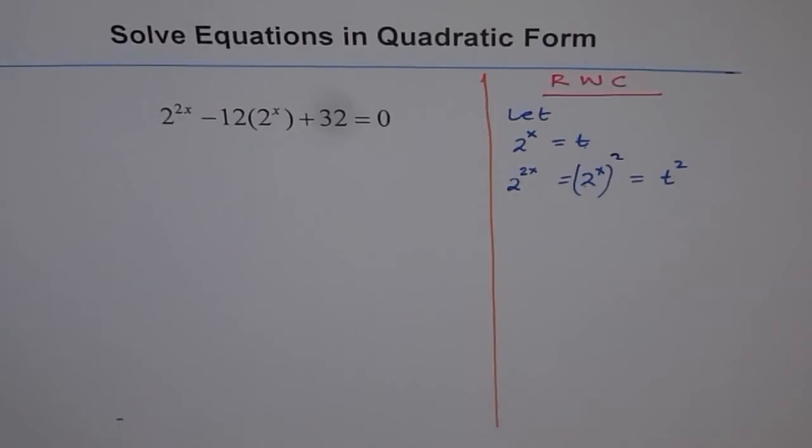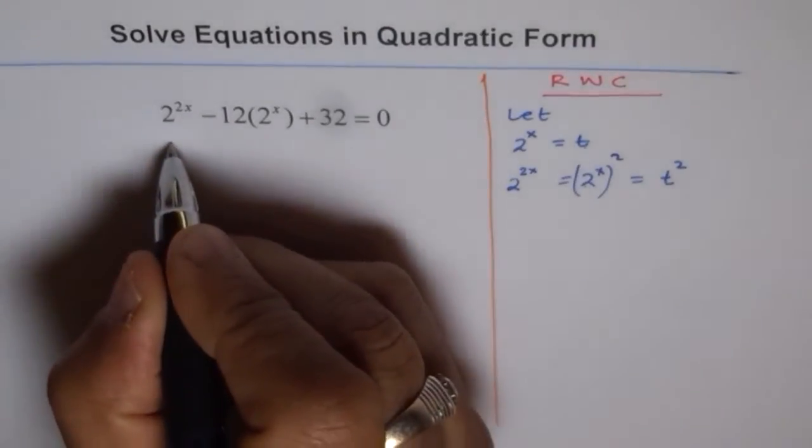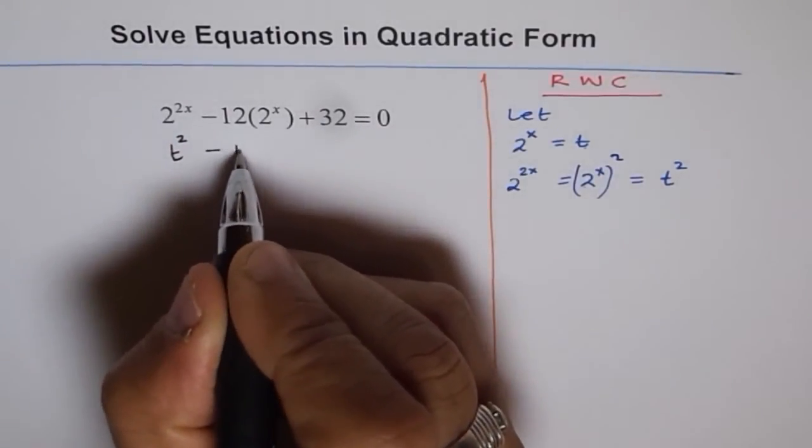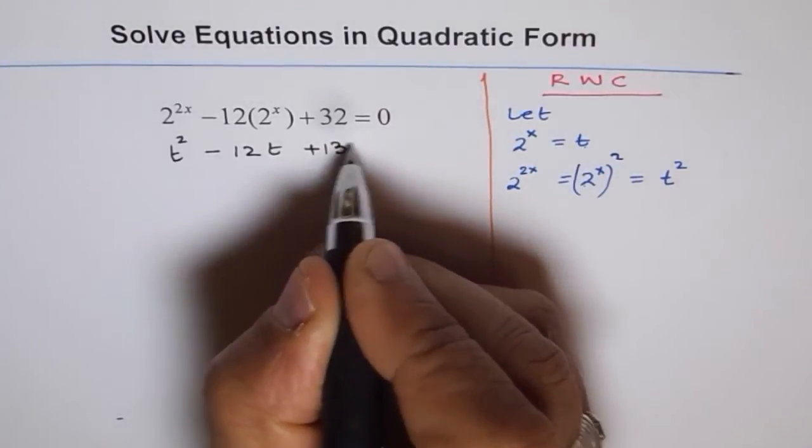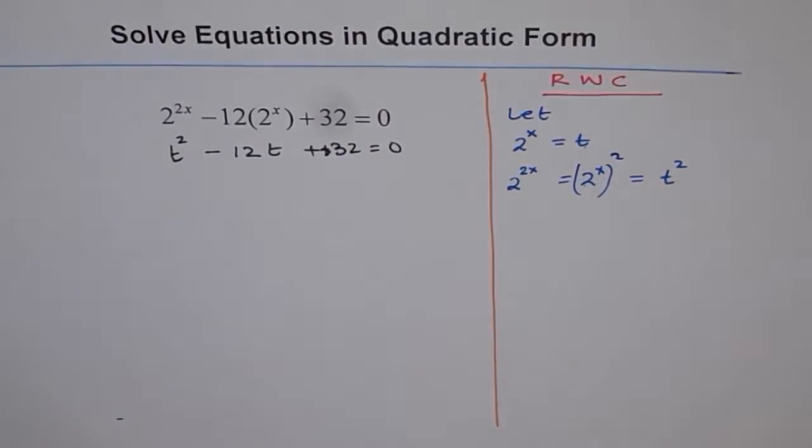Now, we will replace x with t and write 2 to the power of 2x as t squared. So we change the variable from x to t. And that made a magic. It transformed our equation to a quadratic equation, which is t squared minus 12t plus 32 equals 0.